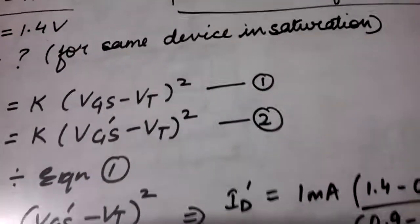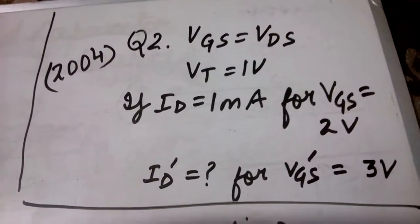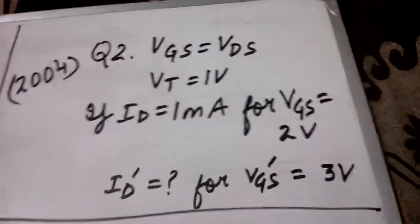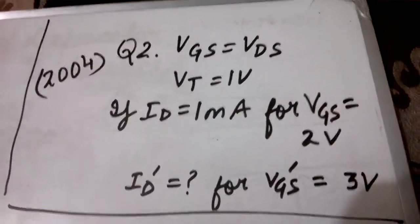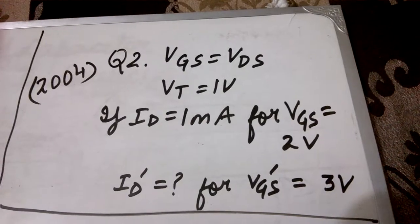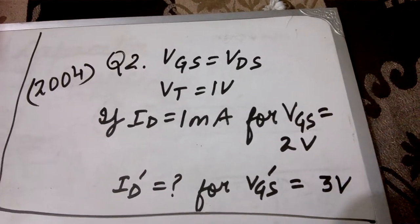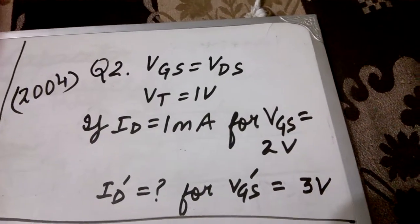Next question was asked in 2004. This question says that Vgs is equal to Vds, V threshold is given to be equal to 1 volt, Id is 1 milliampere for Vgs equal to 2 volts. Similarly, when Vgs dash is now 3 volts, we have to find the value of the drain current.